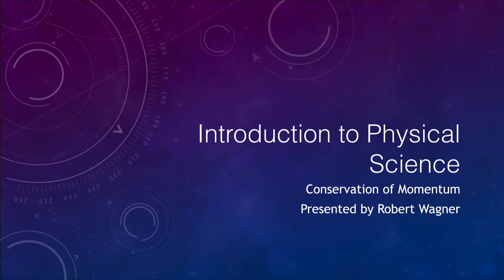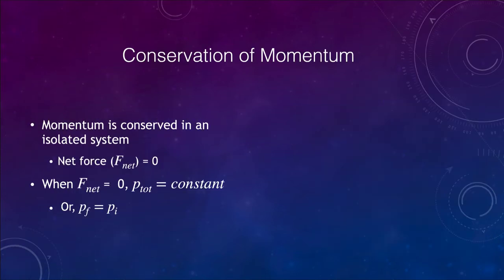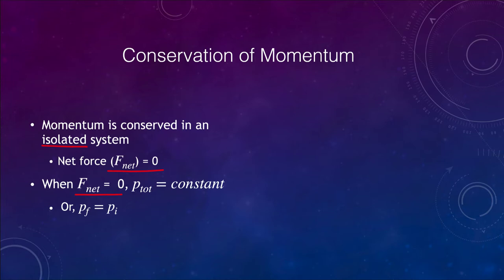Let's talk about conservation of momentum and what this means. In an isolated system, momentum is always conserved, meaning that the net forces are always zero. When the net force is zero, the momentum is constant — the final momentum equals the initial momentum. We can use this to determine what is happening in such systems, including determining velocities and how they have changed.